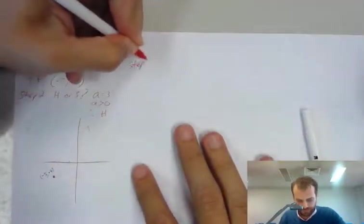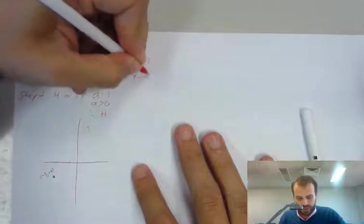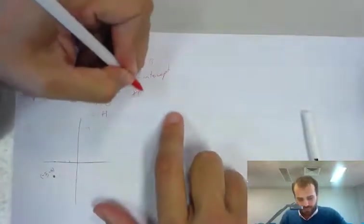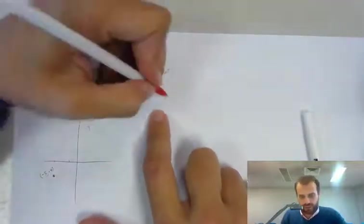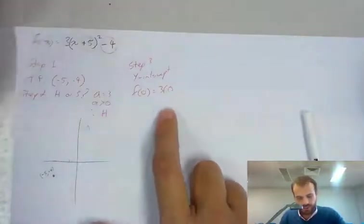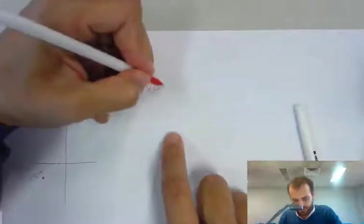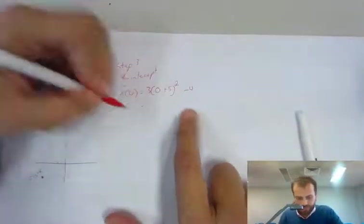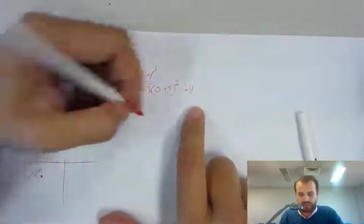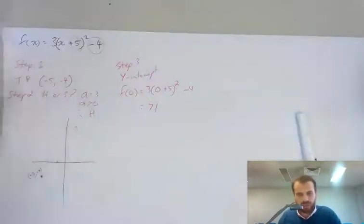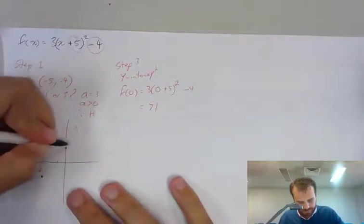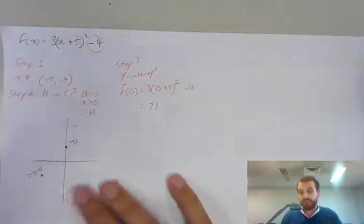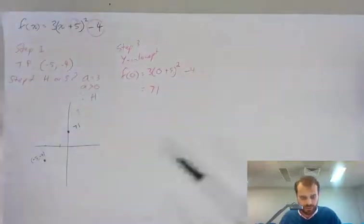So step 3: find the y-intercept. f(0) equals 3 times 0 plus 5 squared minus 4. 25, 75, minus 4, 71. This obviously isn't to scale. It doesn't have to be if I'm sketching this.